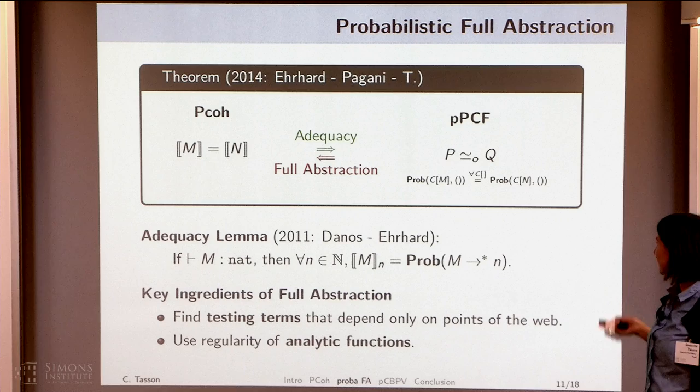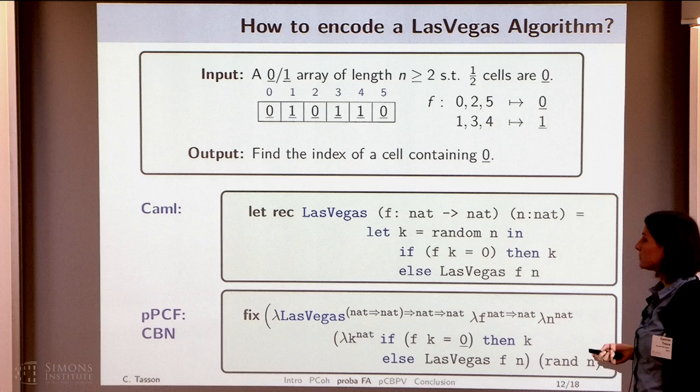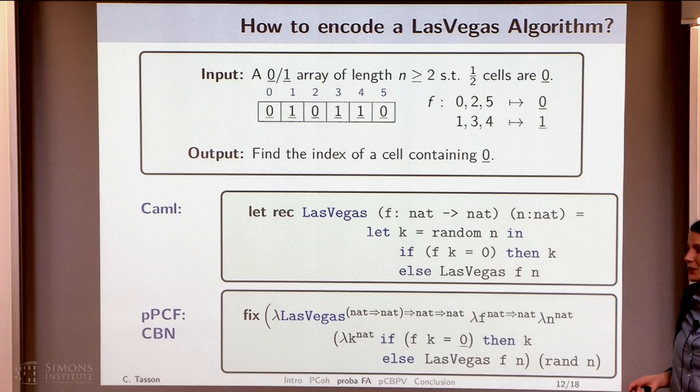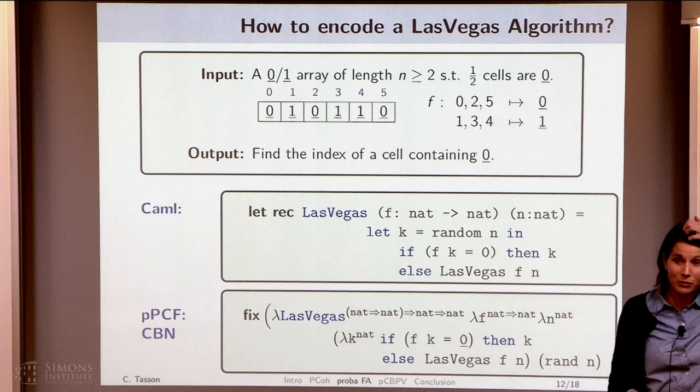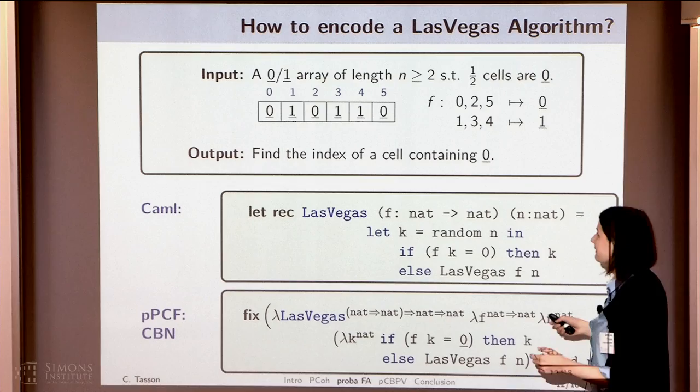So we were very happy with this result, but we forgot something. That's the problem with theorists: there is the grail of full abstraction, and then there is the practical thing. We had this goal of being able to encode probabilistic algorithms, and we failed at that. Let's look at this problem.